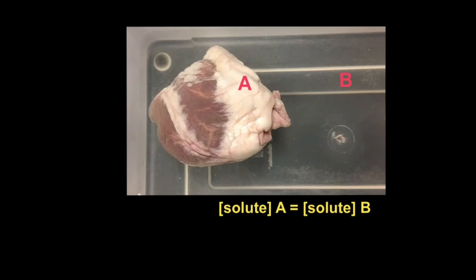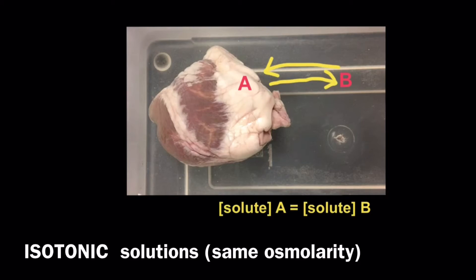This means that while water is able to move between solution A, the cell's cytoplasm, and solution B, the solution in which the organ or tissue is being bathed in, there is no net or overall movement of water towards one or the other. This is because the solute concentrations of each are equal; they are isotonic to one another.